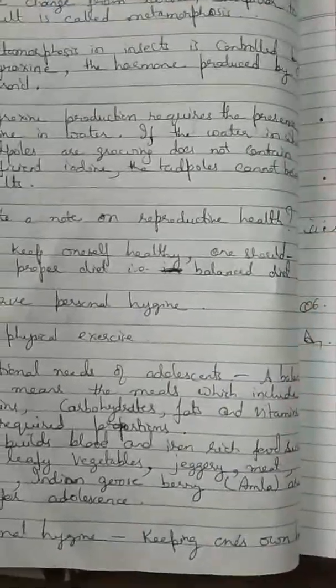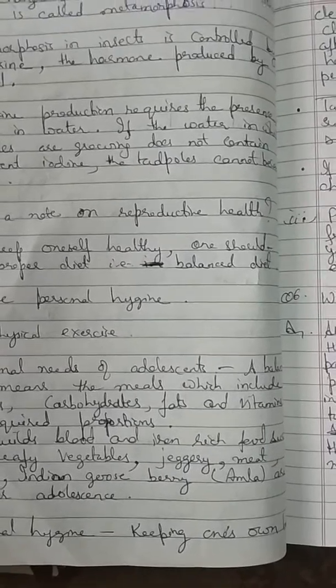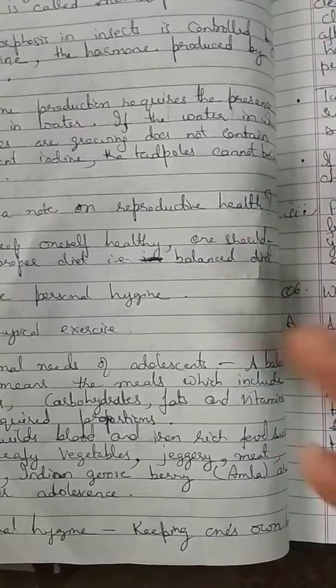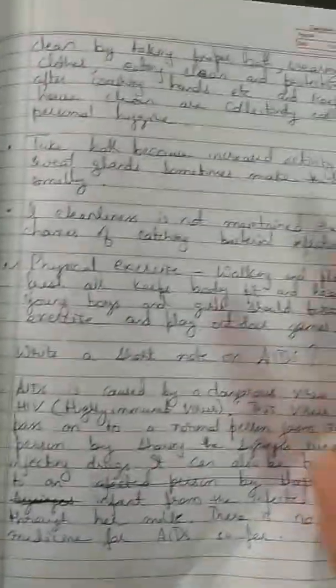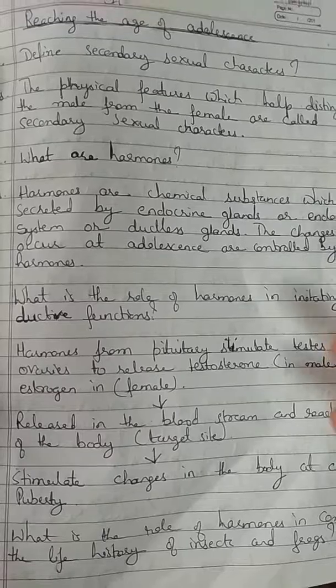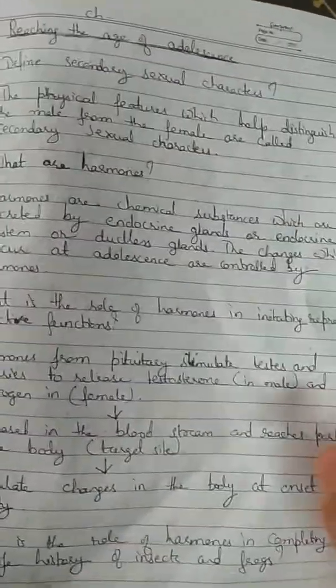You also need to know how these changes happen and how to deal with them — a paragraph is given in the book, so make sure you know that paragraph. Reproductive health is basically part of that only. In animals, the hormones part is very important. You need to know what adolescence is, what an adolescent is, and what the adolescent period is.